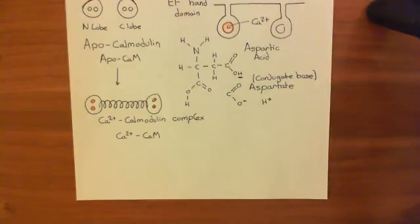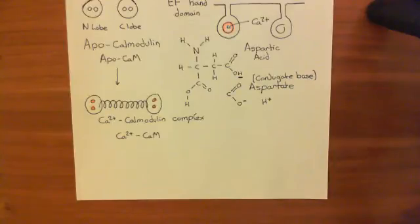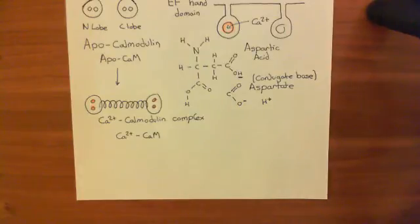Nitric oxide activates the soluble guanylate cyclase. So if you send less nitric oxide, you're going to get less activation of the soluble guanylate cyclase enzyme, so you're going to get less production of cyclic GMP. Cyclic GMP then activates the protein kinase G enzyme, and therefore protein kinase G activity is going to go down. We want to understand how protein kinase G going down is going to cause contraction of the smooth muscle, and in order to understand that, we need to understand how contraction of the smooth muscle is triggered.